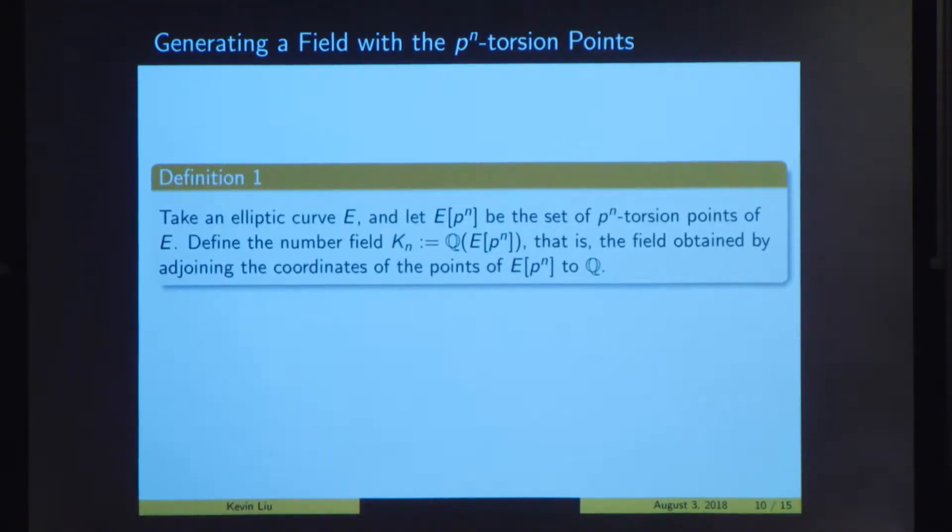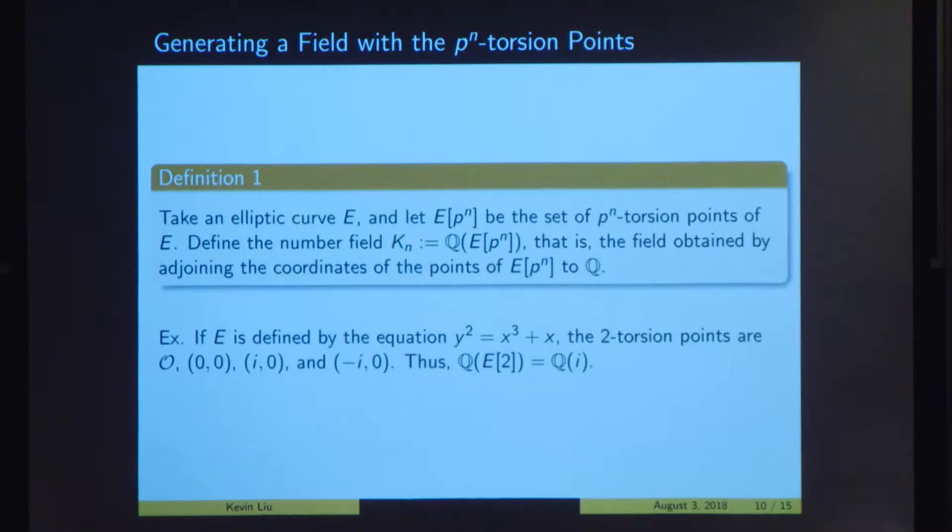So what can we do with these torsion points? So let's take a prime power, p to the n, and consider all the p to the n torsion points on this elliptic curve. And we allow the coordinates to be any complex numbers. So what we're going to do with these coordinates is use them to form a structure called a number field. And what a number field is is just some set of numbers where you can add, subtract, multiply, and divide numbers and stay within the number field. So what we're actually going to do is adjoin these coordinates to the rational numbers. What that means is we look at the rational numbers and we look at all our coordinates. And we find all the numbers that we can get by adding, subtracting, and multiplying any combination of these. And so we'll call this number field kn. And to make this all more concrete, suppose we have an elliptic curve defined by the equation y squared equals x cubed plus x. And we can show that the two torsion points on this elliptic curve are the identity o, the origin 0, 0, i, 0, and negative i, 0. And when we adjoin all these coordinates to the rational numbers, we get the field Q adjoin i, which is simply the set of all complex numbers such that both the real and imaginary parts are rational.